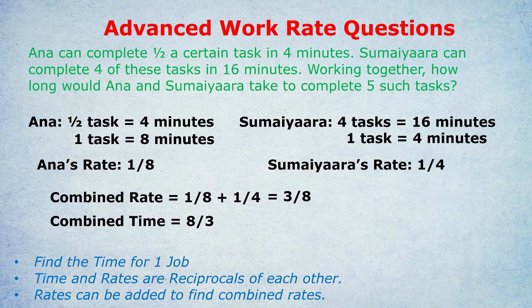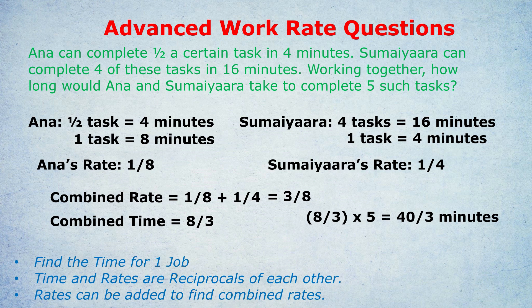But notice that's not the answer — the question was asking about five tasks, not one. At the 165-plus or 700-plus level, they change what you're looking for. So if 8/3 is the time for one task, we multiply by five to get the time for five tasks: that's 40/3 minutes. That's the answer — 40/3 minutes. If they wanted seconds, we'd multiply by 60. What matters is this beautiful method: find combined rate, find combined time, then multiply by five because it wasn't one task but five.